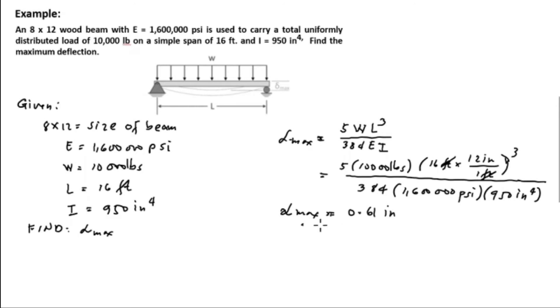So 0.61 inch will be the maximum deflection of a uniformly distributed load of 10,000 pounds with a length of 16 feet.